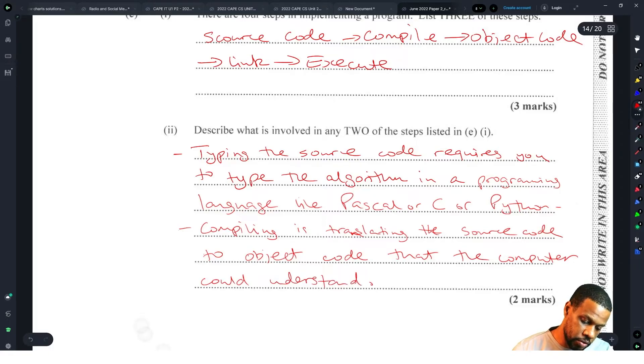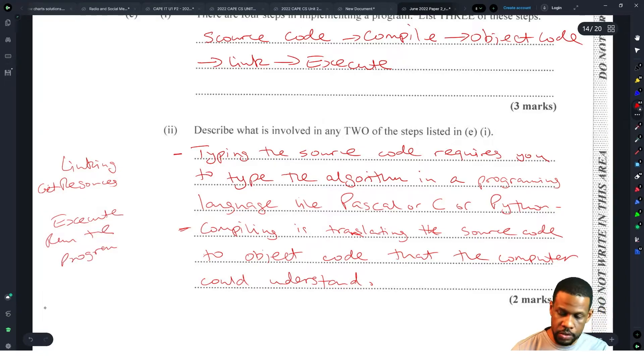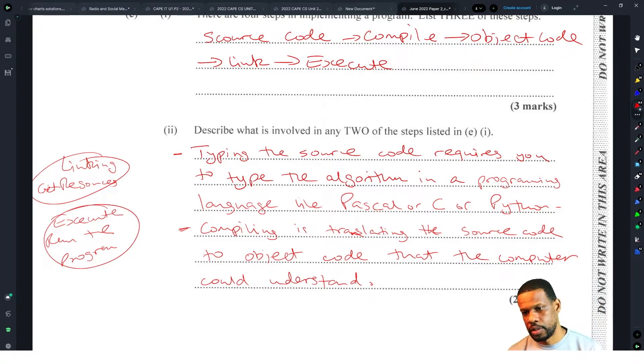Linking is to get all the resources, basically get resources. And execute is run program. Debugging is not part of it. I won't say that debugging is part of it.